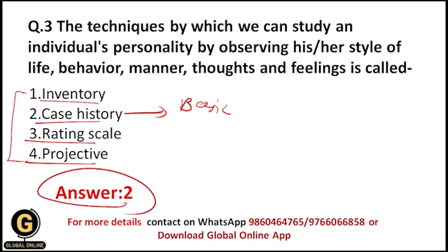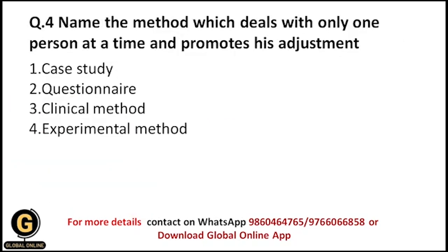That is why the correct answer is case history. The other options — inventory, rating scale, and projective — are also techniques, but they are techniques by which we cannot study an individual's personality specifically through observation of style of life and behavior. Therefore the correct answer is case history.